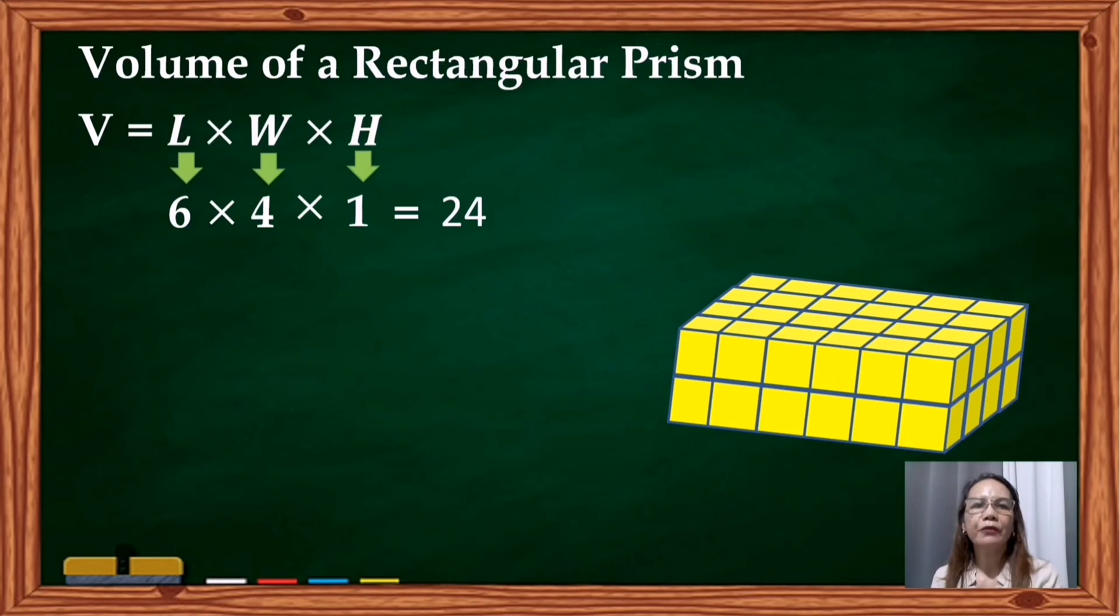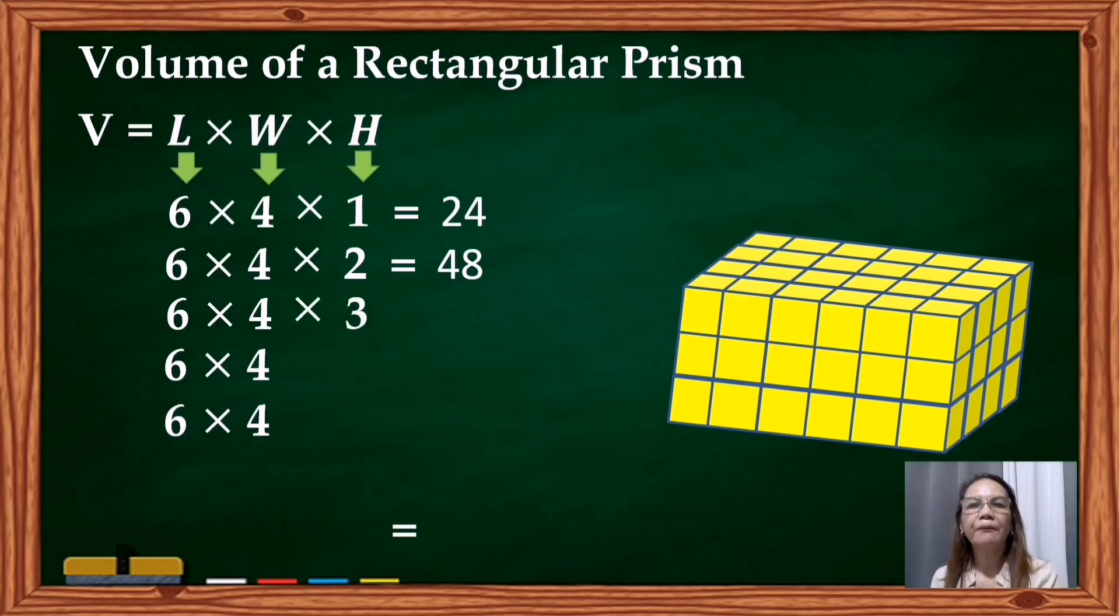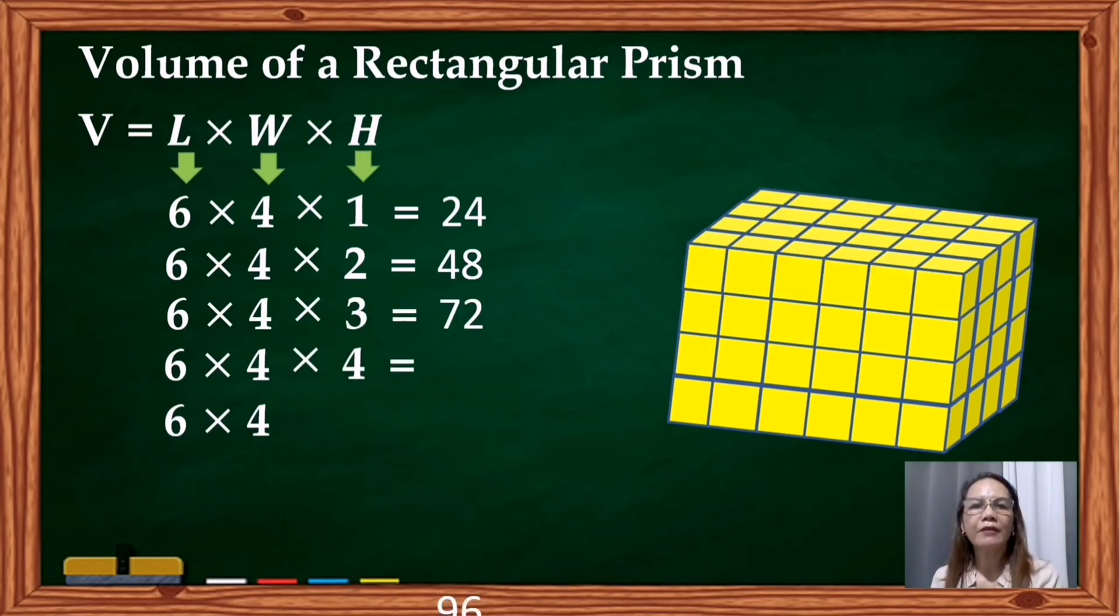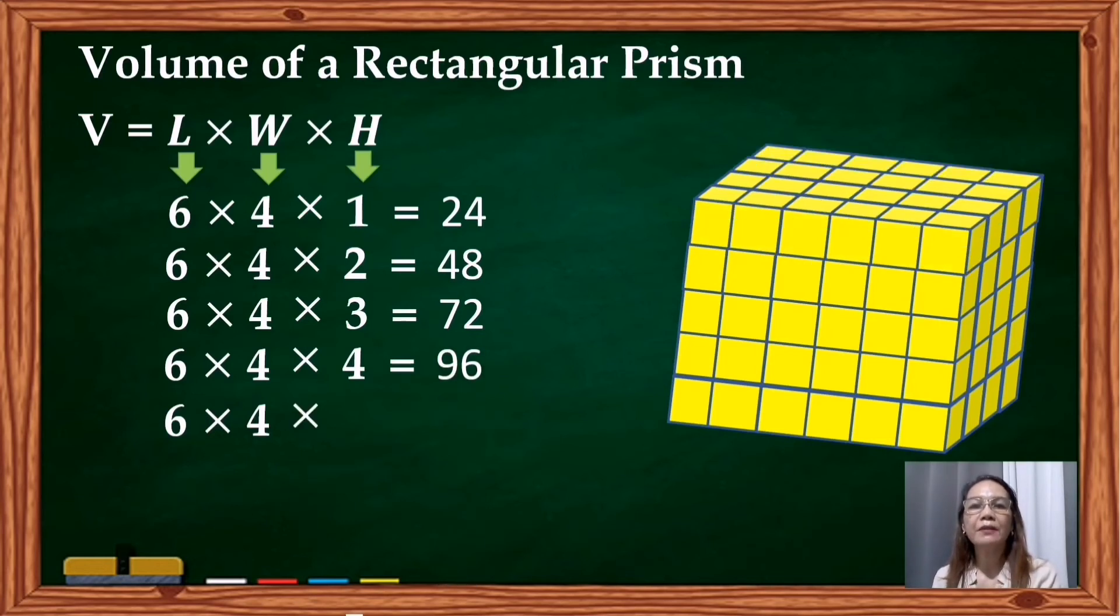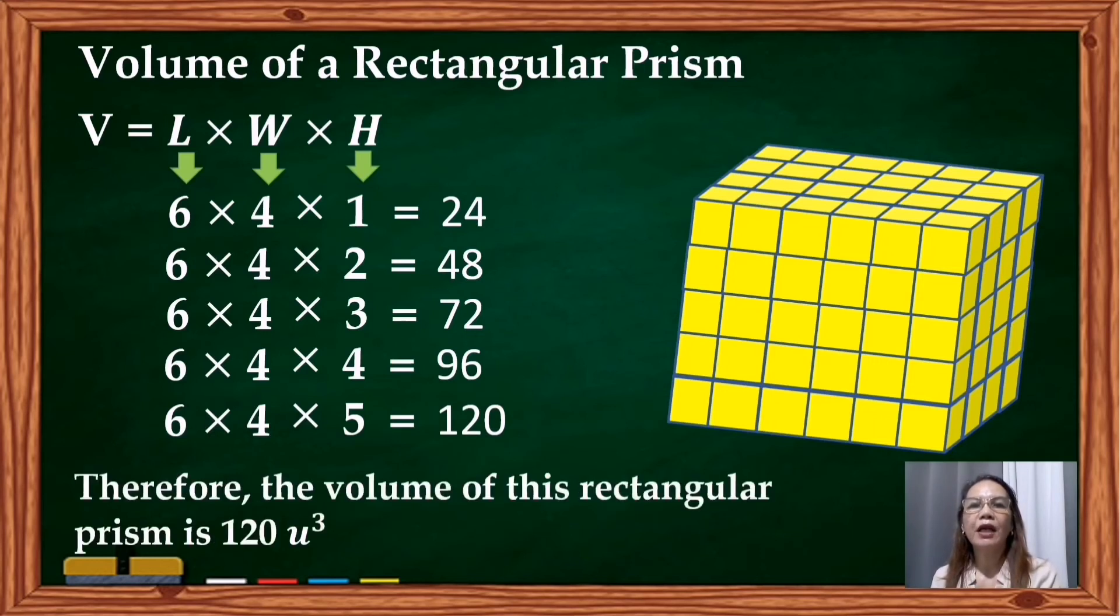6 times 4 times 2 gives us 48. 6 times 4 times 3 gives us 72. Again, 6 times 4 times 4 gives us 96. And 6 times 4 times 5, it gives us 120. Therefore, the volume of this rectangular prism is 120 cubic units.